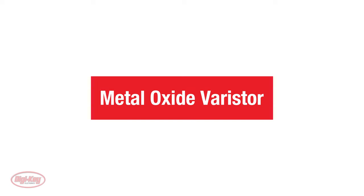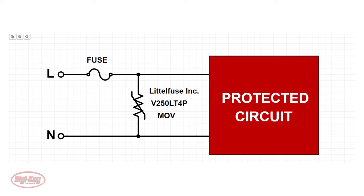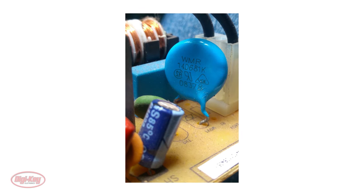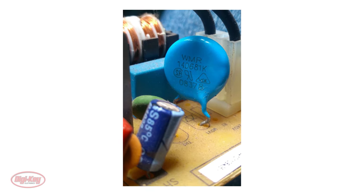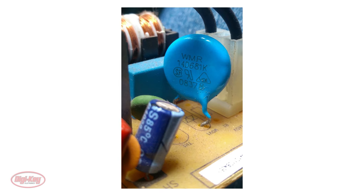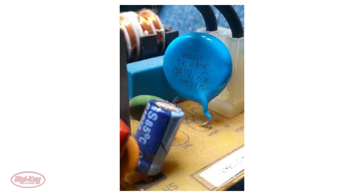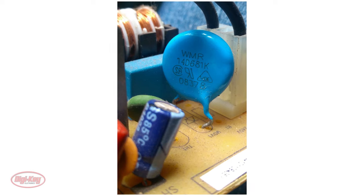Another device used in circuits to suppress transients is a metal oxide varistor, or MOV. It behaves like a variable resistor that has very high resistance under normal situations, but suddenly drops its resistance to almost zero ohms during transients. Much like with TVS diodes, metal oxide varistors are also connected in parallel to the electronic circuit to be protected. Usually, metal oxide varistors are designed to be operated continuously across AC power lines, just like the V250LT4P. If transients are within the limits of the MOV used, it can be used after multiple surges.